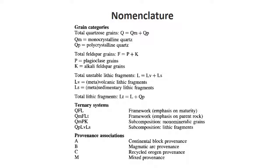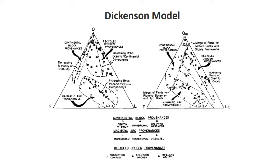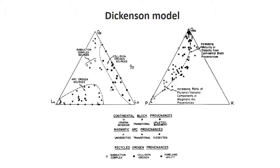Here we have various ternary diagrams, for example the QFL model, with data points plotted in terms of their compositions. We can group these compositions and refer to them as continental block, recycled origin, or magmatic arc provenance. We see that groups of geochemical signatures distinguish magmatic arc provinces from the others. Since we have six groups to deal with, we can make many ternary diagrams.